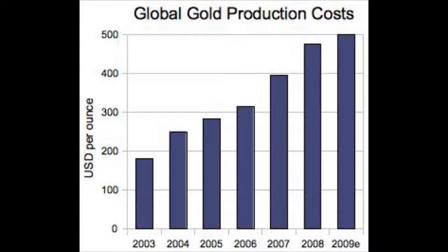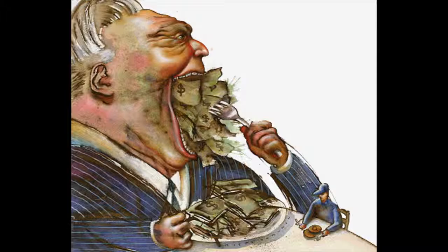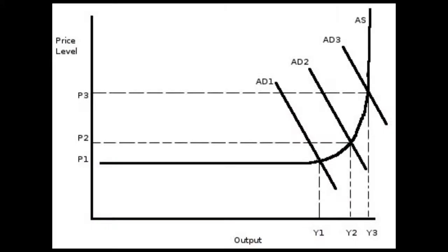Or he might just be a little greedy and trying to get more revenue. Demand-pull inflation is when our aggregate demand starts to shift right while we're inside the inflationary gap in the aggregate supply curve — but I'll get to that later.